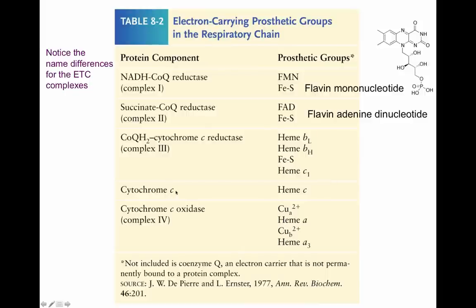In the cytochrome C protein, you have heme C. In the cytochrome C oxidase — complex four — you have copper ions, heme A, heme A3, and a copper B ion as well.